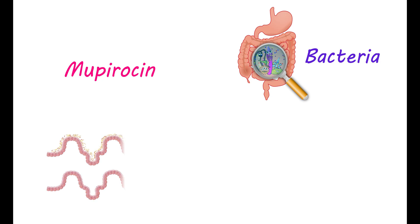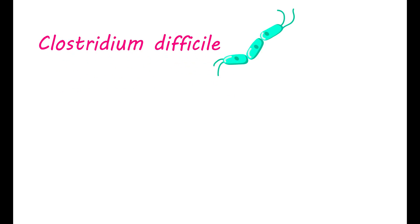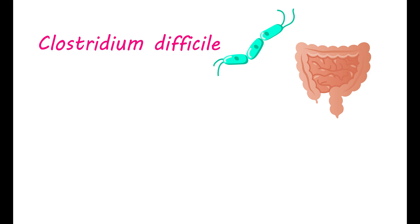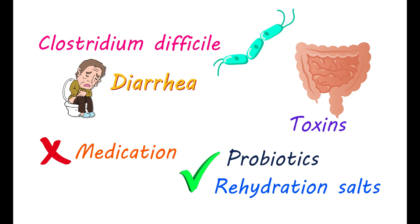Risk of diarrhea: Use of Mupiracin may increase a specific bacteria in your intestine. This medication can suppress the growth of a variety of useful bacteria in your gut that fight foreign and disease-causing bacteria. However, with the use of Mupiracin, these gut bacteria may be inhibited, leading to the development of pathological bacteria in your gut. One such microorganism is Clostridium difficile. This bacteria can rapidly grow in your intestine and release toxins, resulting in diarrhea. If you observe diarrhea with use of Mupiracin, it may indicate a Clostridium difficile infection. In such cases, you may use an alternative agent. Don't use any medication to treat such diarrhea without consulting your doctor. It is better to use probiotics and rehydration salts to restore the condition.